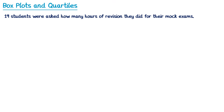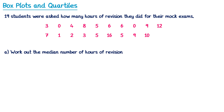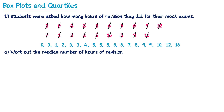Let's have a look at what an exam question may look like on this topic. For this question we have 19 students who were asked how many hours of revision they did for their mock exams. First of all we're going to try and work out the median number of hours. To do this I'm going to rewrite the numbers in order from lowest to greatest: 0, 0, 1, 2, 3, 3, 4, 5, 5, 5, 6, 6, 7, 8, 9, 9, 10, 12, 16. To locate the median I do the number of students — 19 — add 1 and divide by 2. This tells me the median is in the 10th position. Counting along from the left, the 10th number is 5. So the answer to the median is 5 hours.